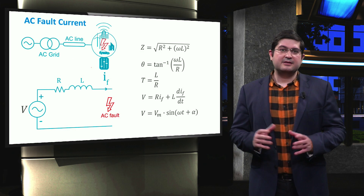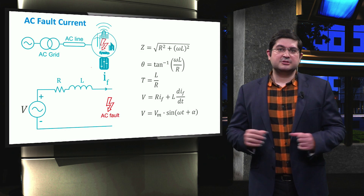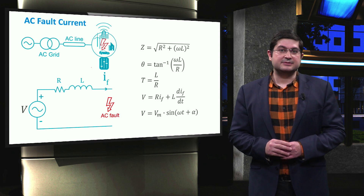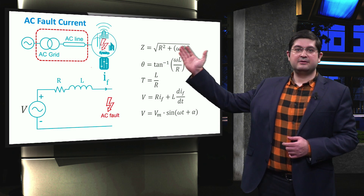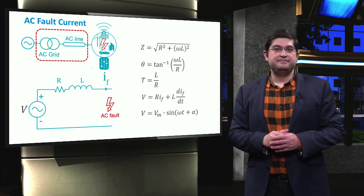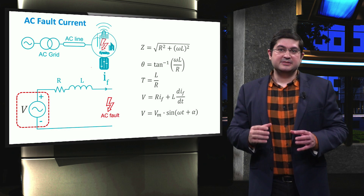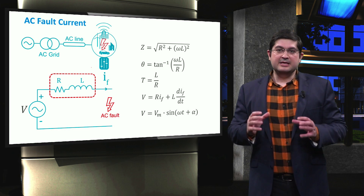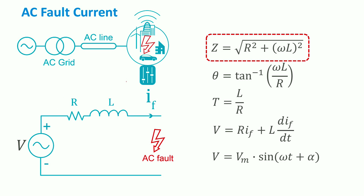If the fault occurs inside an AC microgrid which is connected to the external grid, it is likely that a large portion of the fault current is fed by the AC grid. The external grid is connected through a transformer and a line to the AC microgrid. The equivalent electrical circuit shows the grid represented by a voltage source, where the impedance of the line is represented by the resistance R and the inductance L. The amplitude of the impedance Z depends on the resistance R and the reactance, which is equal to omega multiplied by the inductance L.